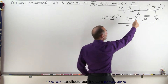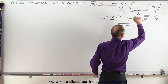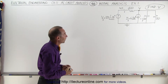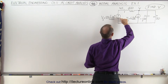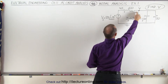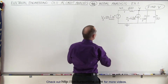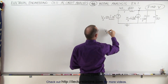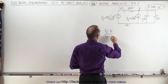We take our node, find all the currents entering the node, all the currents leaving the node, and then we set those equal to zero. To find the current leading into the node from the voltage source, we take the voltage difference between these two and divide it by the impedance between them. So the current leading in is going to be V of the source minus V at the node, divided by the impedance — in this case 40 plus J20.